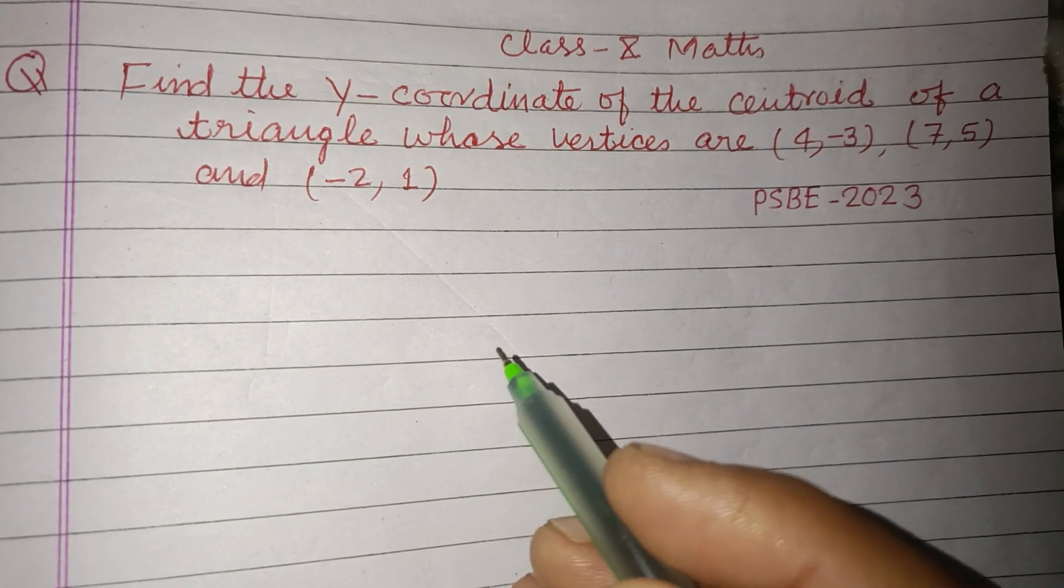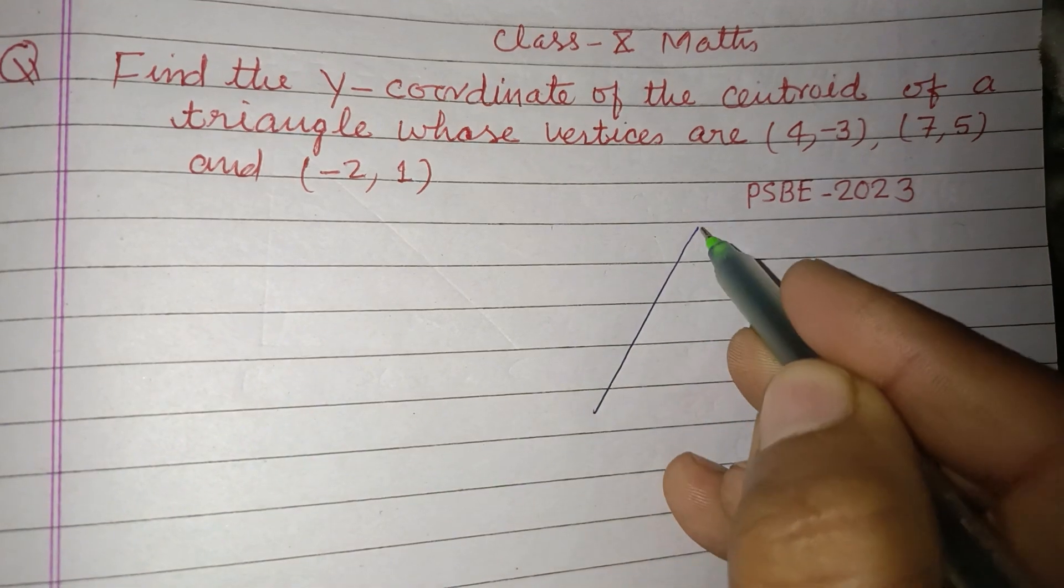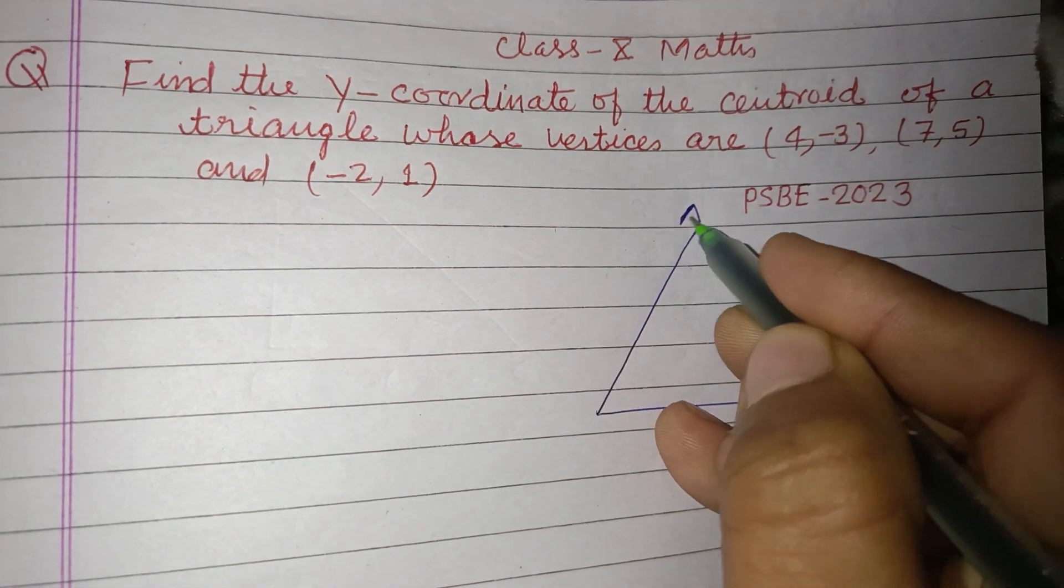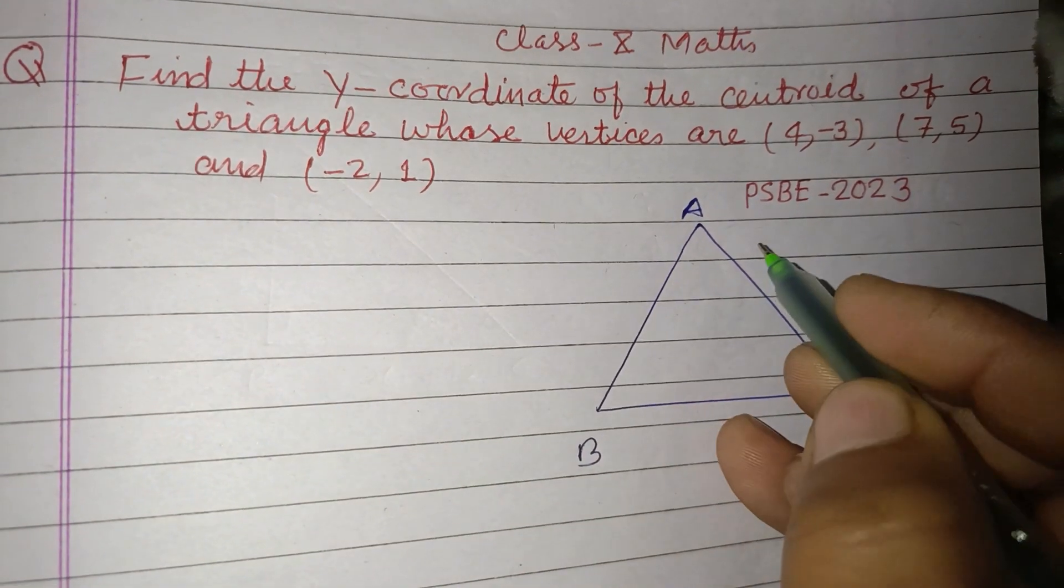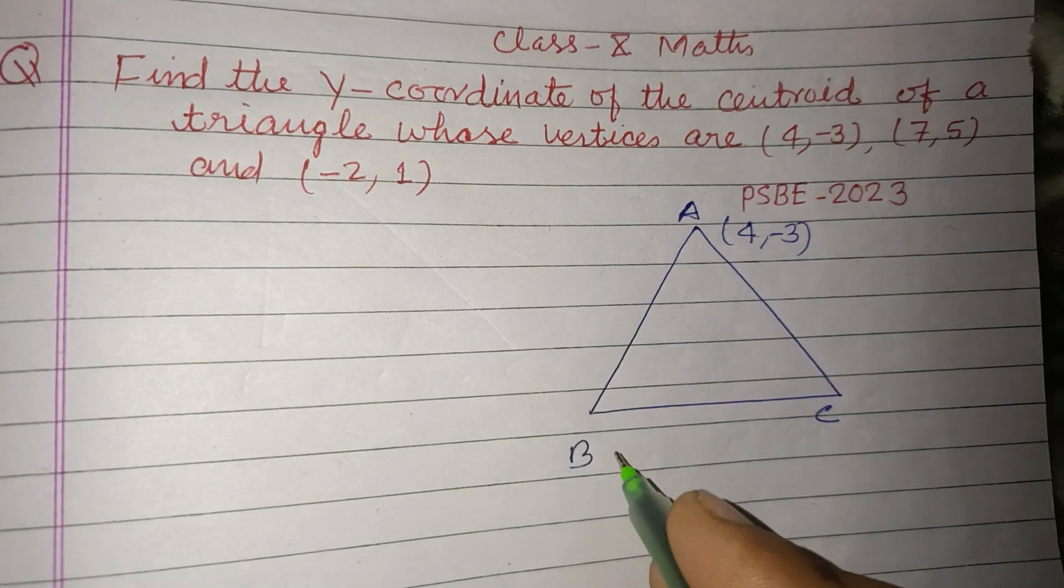and (-2, 1). So here is a triangle with vertices A, B, C. Vertex A is given as (4, -3), and